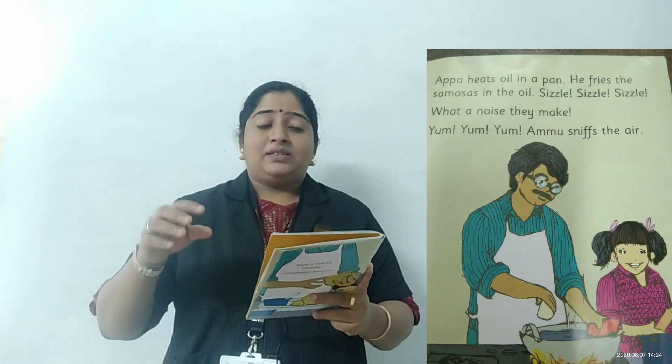Did you eat samosa? What are the ingredients you find in it? Onion, green chilli, carrot, potatoes — sometimes beetroot also is there. These are the ingredients which are boiled and which we use to fill in the samosas. Now all the samosas are filled and prepared. Samosas are filled with vegetables and kept at the side for frying. Appa heats oil in a pan and fries samosas in the oil.